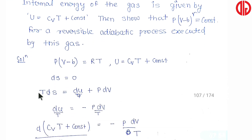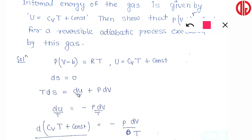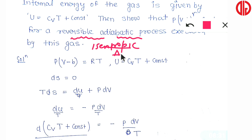We will use the TDS equation. The first TDS equation is: T·ds = du + p·dv. Since the process is reversible adiabatic, it is isentropic, so ds = 0. Therefore du + p·dv = 0, meaning du = −p·dv. Dividing both sides by T: du/T = −p·dv/T. This is our working equation.